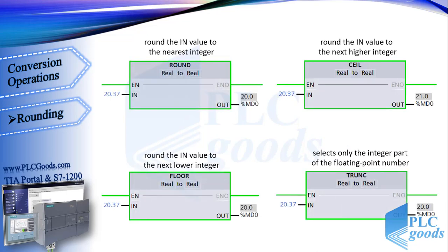TIA software has four basic instructions to round a fractional number. The first instruction rounds the IN value to the nearest integer. The next instruction rounds the IN value to the next higher integer.